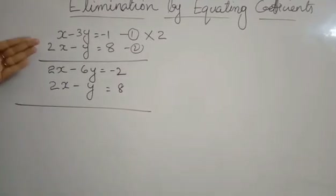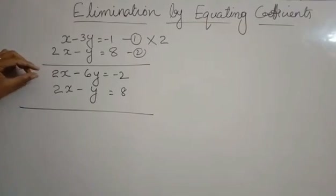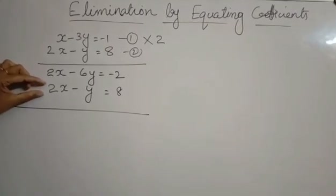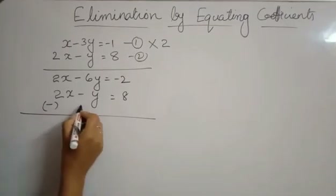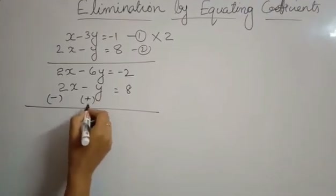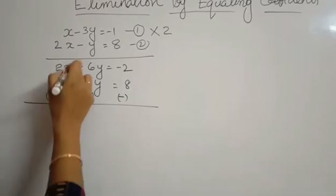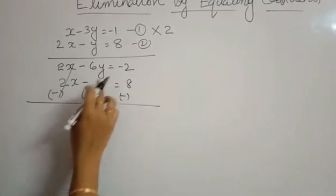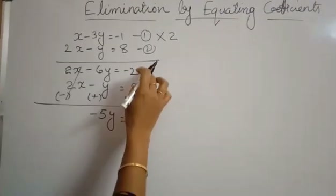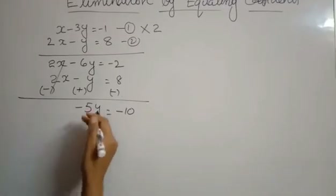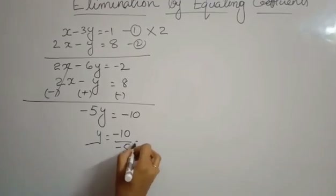Since both coefficients are positive, we subtract. Even if both were negative, you would still subtract. In case the numbers are of opposite sign — one positive and one negative — then you add instead. Since both are positive here, we subtract. The minus y becomes plus y and this will be minus 8. When we subtract 2x from 2x, it cancels. Then minus 6y plus y gives minus 5y, equal to minus 10, since we have minus 2 minus 8. Simplifying: y equals minus 10 divided by minus 5, which equals 2.